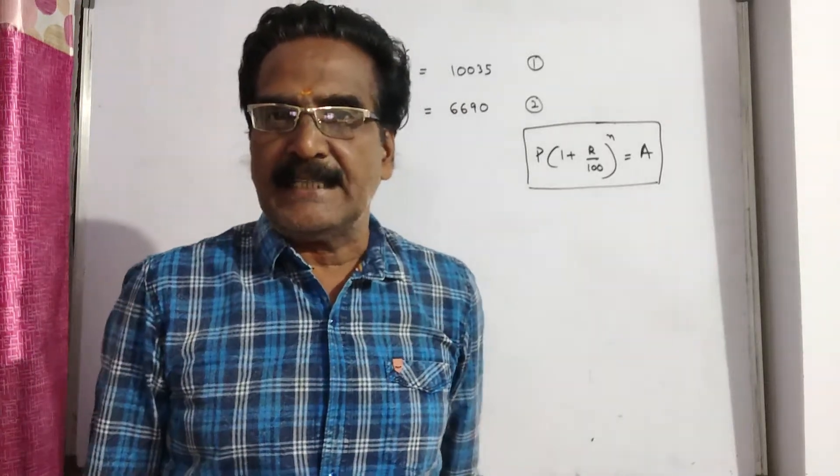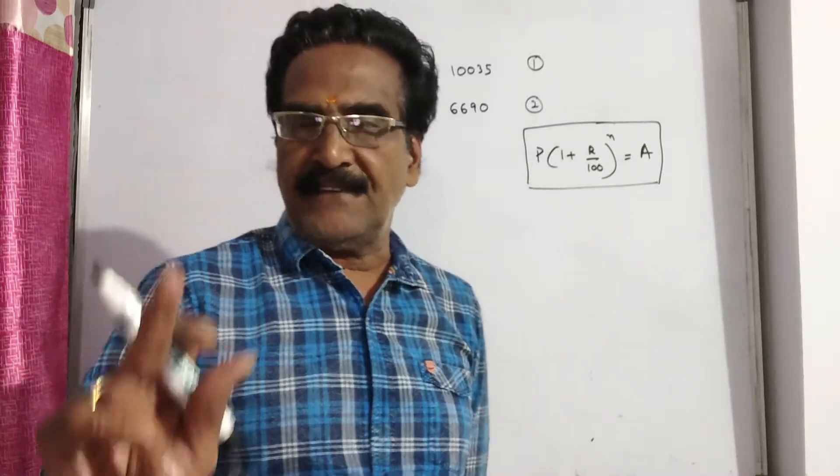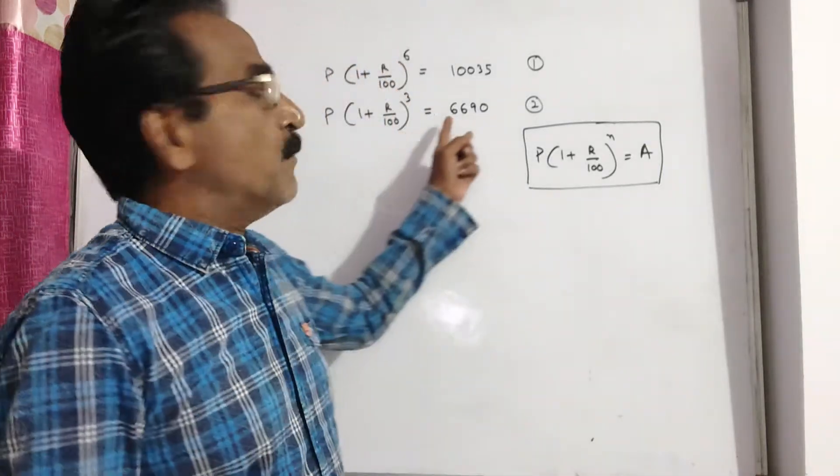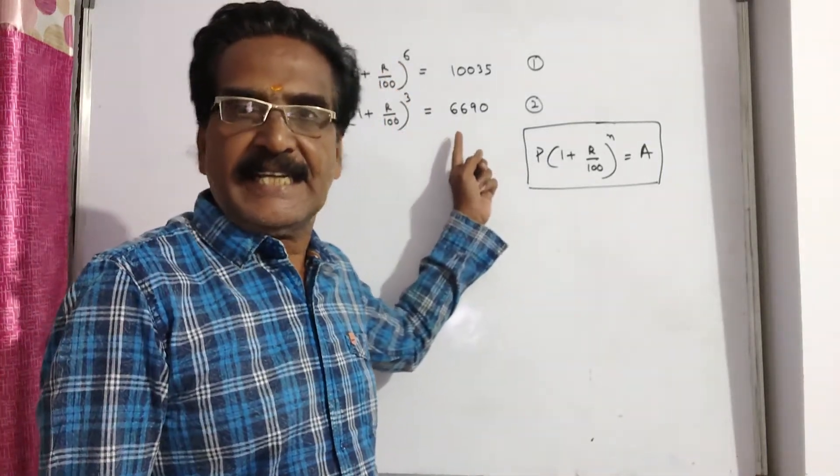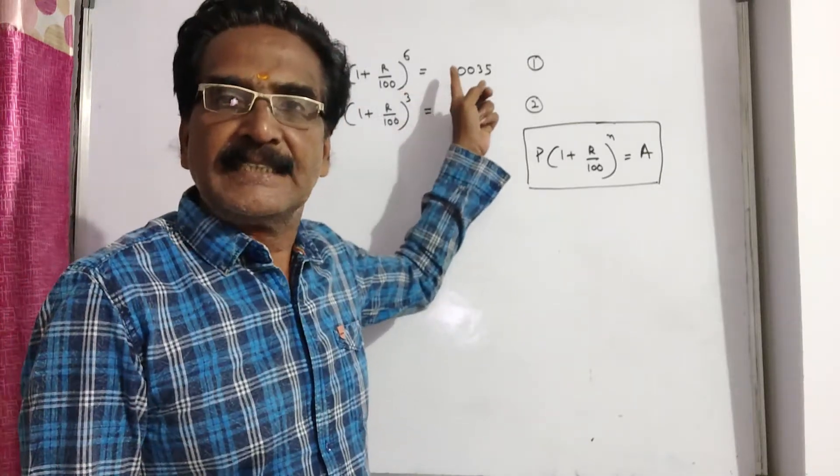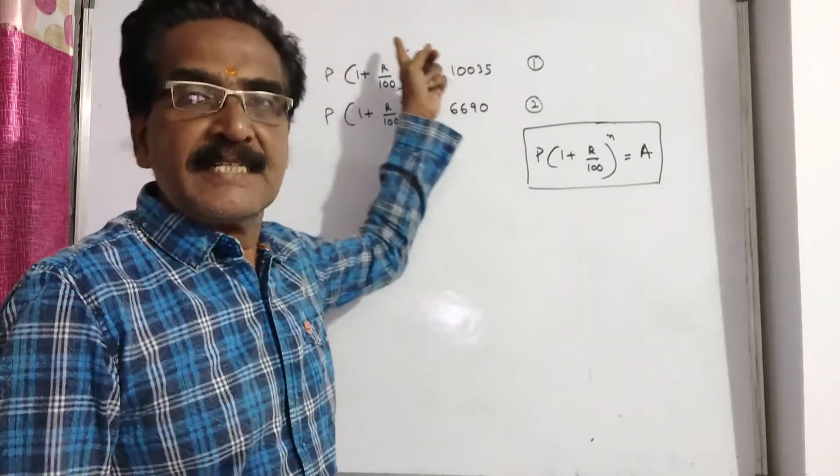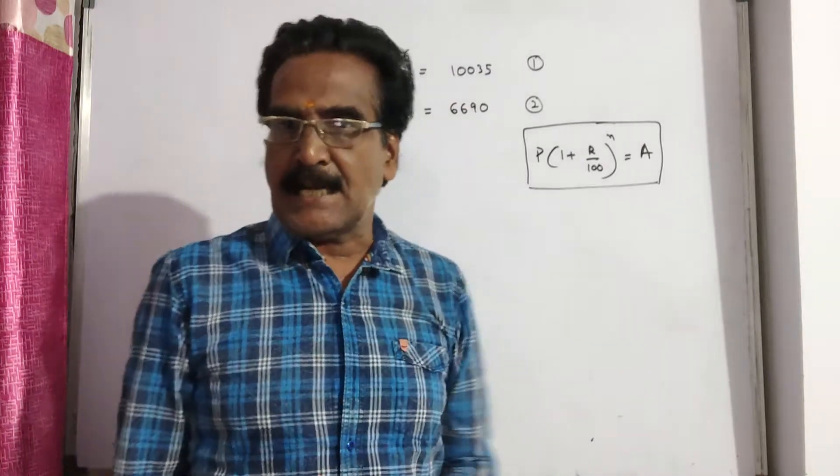Hi friends, good morning. Please look at the next problem in compound interest. See friends, a certain sum amounts to 6690 in 3 years and 10035 in 6 years. What is this sum?